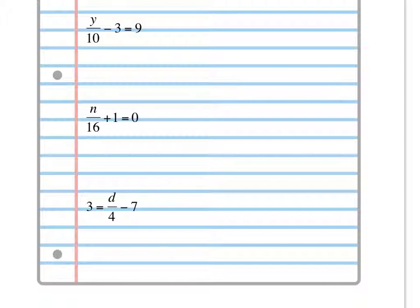Anyways, the first thing I need to do is I need to recognize that my variable is D, and it's attached to 4 by division and 7 by subtraction. So I'm going to want to get rid of the 7 first by adding 7 to both sides. And here I'll draw my boundary.